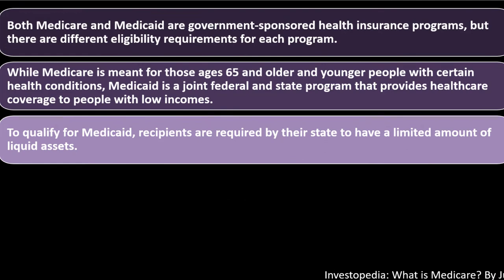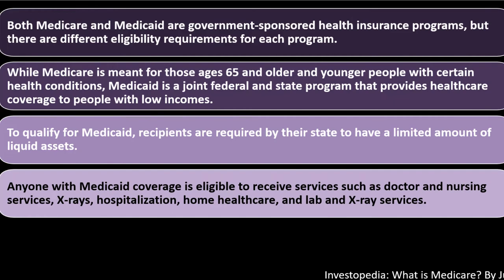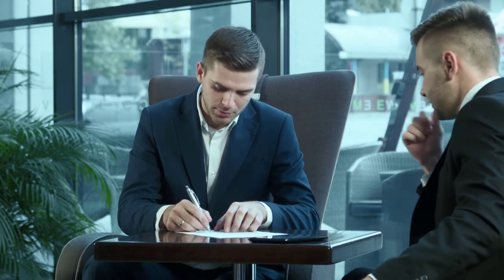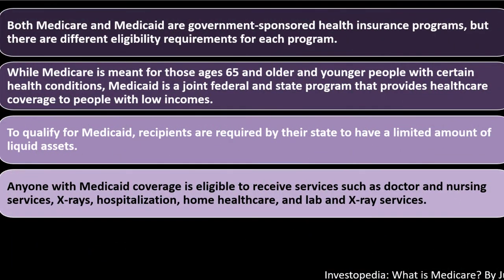To qualify for Medicaid, recipients are required by their state to have a limited amount of liquid assets. The good thing about these programs is they benefit people whose incomes or assets are below a certain level — that's the point of a welfare-type program. But the downside is that it creates a disincentive: people may aim to stay below a certain asset level. That's the challenge of welfare systems — how do you help people who need it without creating incentives for people to do worse and remain dependent?